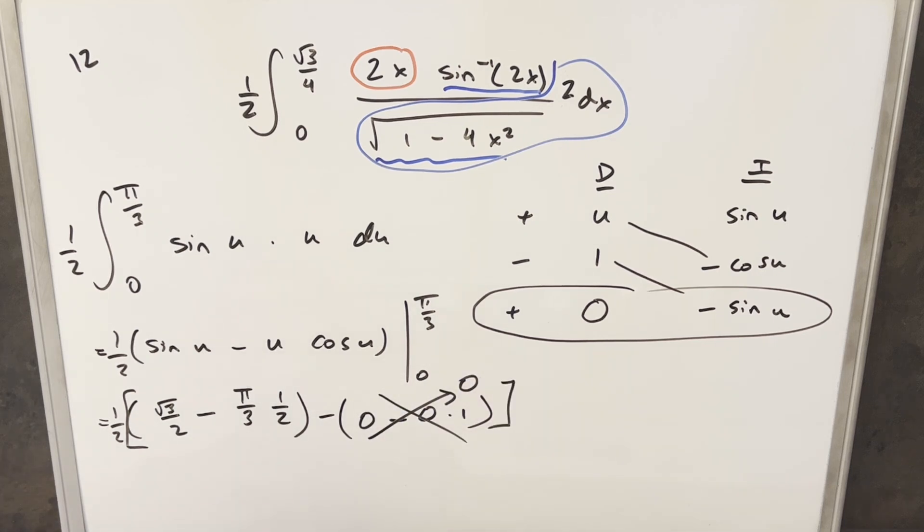So in order to finish this off, I just need to distribute in this 1 half. So for our first term, this is going to become square root of 3 over 4. Then multiplying pi over 3 times 1 half is pi over 6 times 1 half gives me minus pi over 12. And that's it.